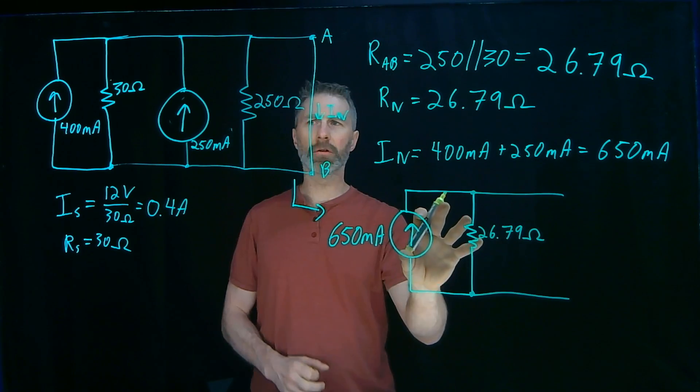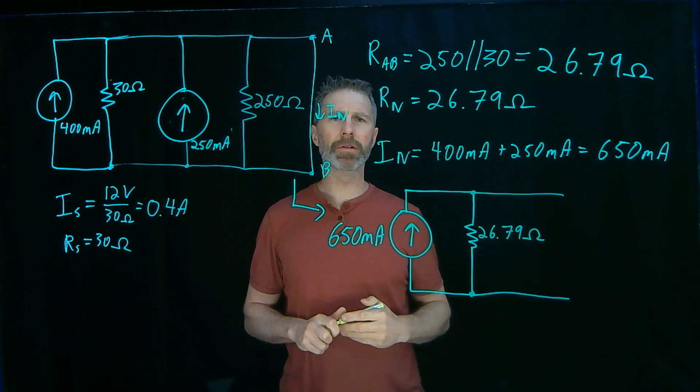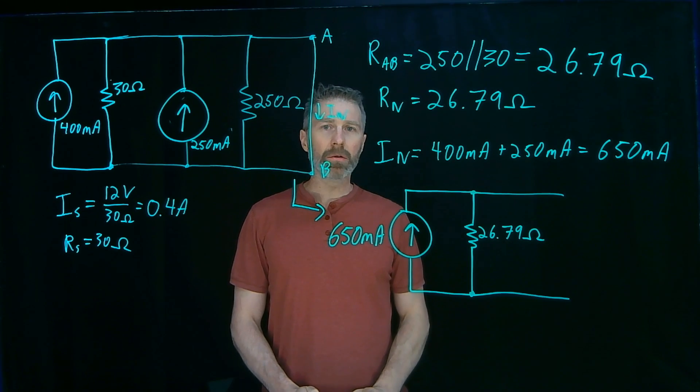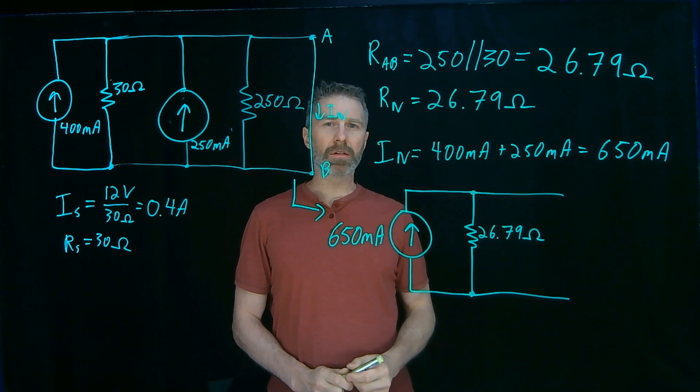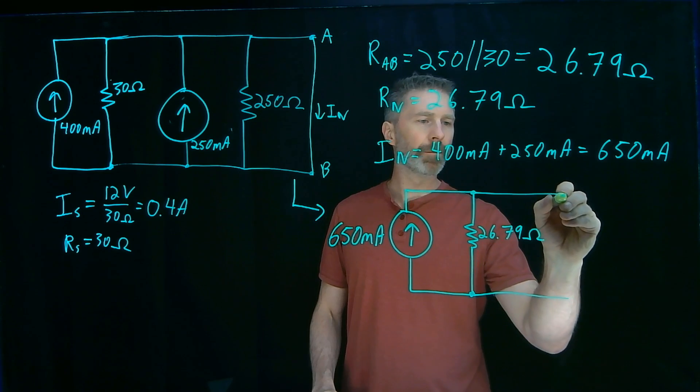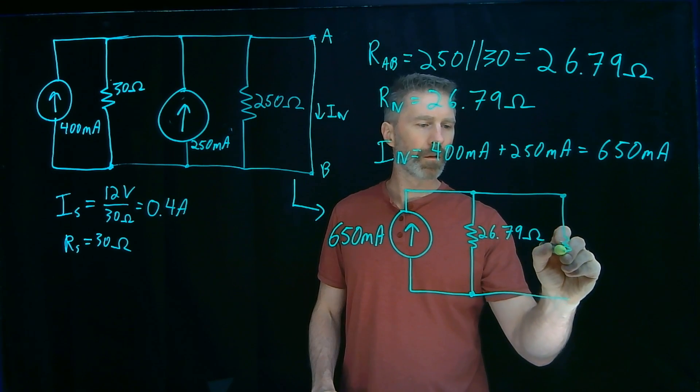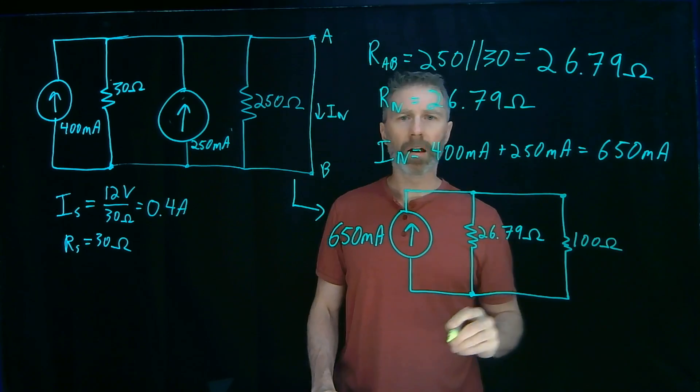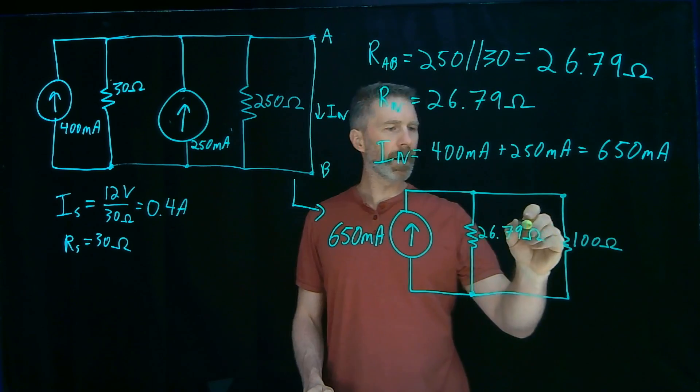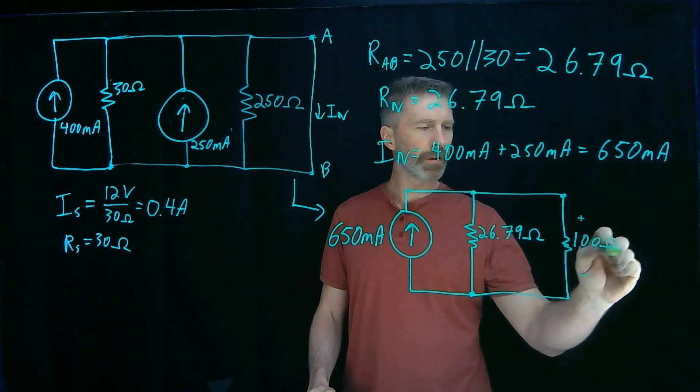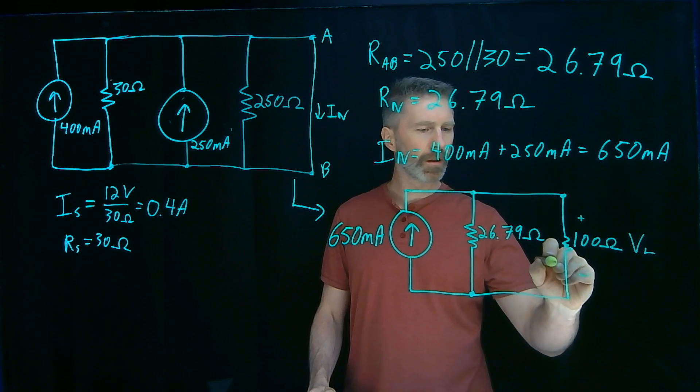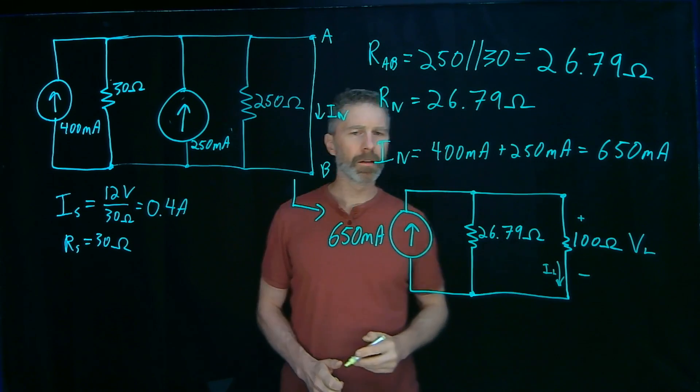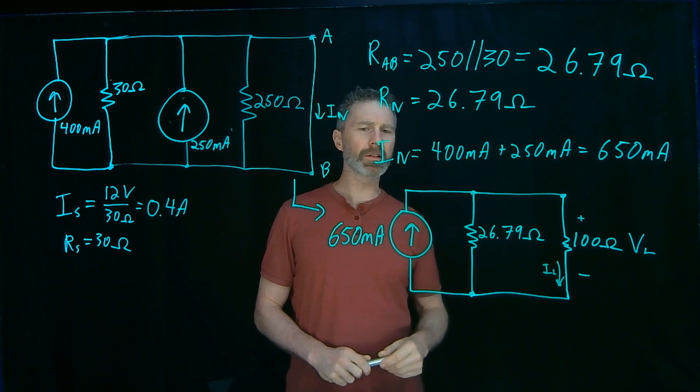And that's the Norton equivalent of this original circuit. Now, what I can do is complete the analysis of the circuit by putting the load back in. The load is a 100 ohm resistor. And if I put the load back in the circuit, I can now figure out what the voltage across the load is and what the current through the load is. This is a pretty simple analysis now.